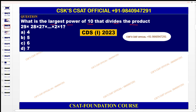Now let us do the question. This was asked in the recent CDS Term 2023. They are asking: what is the largest power of 10 that divides the product? This means it has to be in the format of 2 × 5. When 2 × 5 forms a 10, how many such 2 × 5 pairs can we form? That gives you the number of powers of 10. Let us now see Method 1.